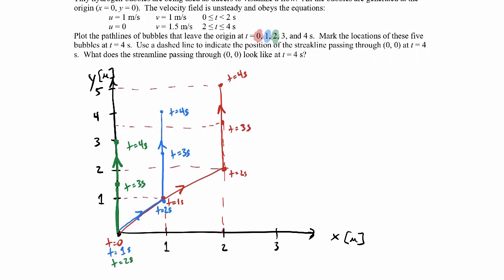Now let's do the one released at three seconds — in a pinkish color. That one is released from the origin and we only have from three to four seconds, so it follows the vertical line up to y=1.5 at four seconds. The bubble released at four seconds just stays at the origin. So those are our path lines — four different colored lines, all released at different times, and they all look a little different because we're dealing with an unsteady velocity field.